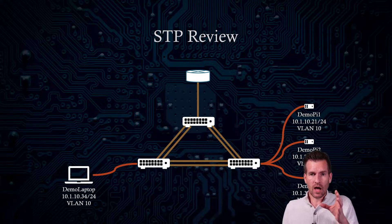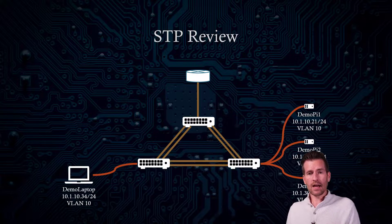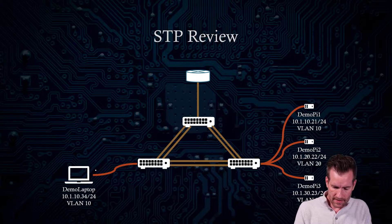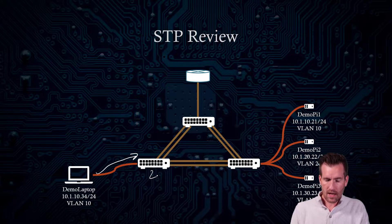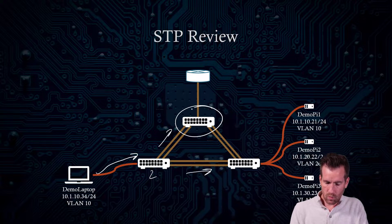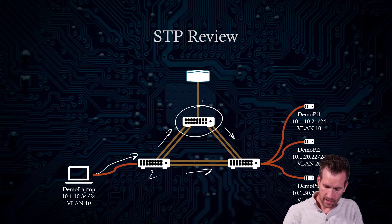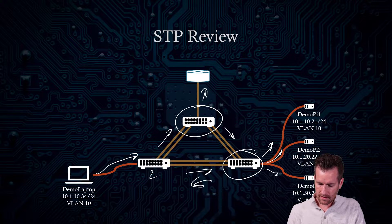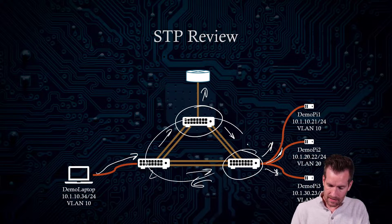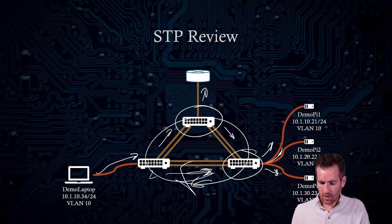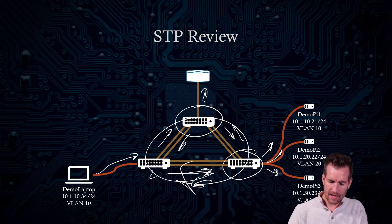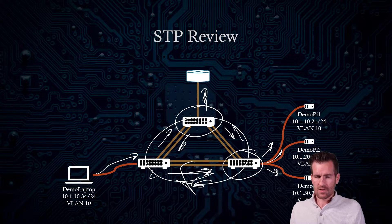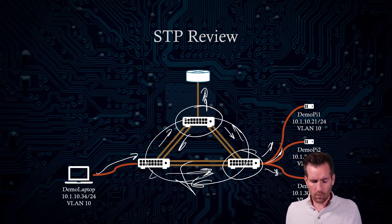If you didn't have Spanning Tree Protocol enabled on your network and you had redundant links, it could cause a lot of problems with switching loops. Switching loops occur when there are redundant links, and a broadcast from Demo Laptop gets sent to Switch 2, then forwarded out all other links. Switch 1 receives it from Switch 2 and broadcasts it out, Switch 3 does the same, and it multiplies in both directions. Even a single broadcast could continue to multiply across the network, so it's really problematic.